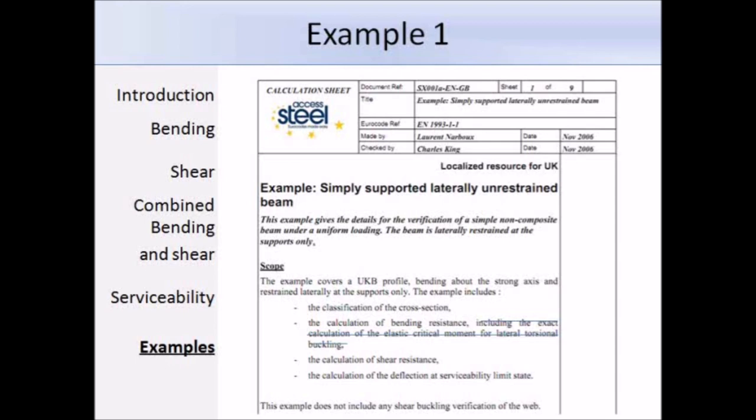We have a simply supported beam, and it's laterally unrestrained, but for the benefit of this lecture, we're going to assume it is restrained and leave out the LTB check. Here they have a checklist, and they're going to classify the cross-section, calculate the bending resistance, the shear resistance, and then check the deflection.